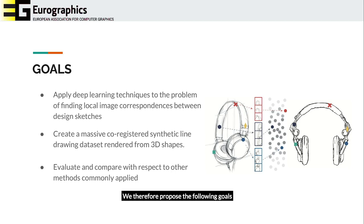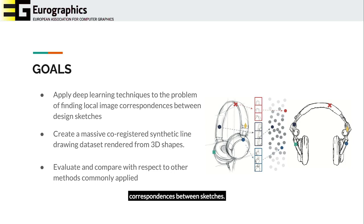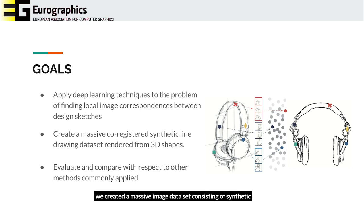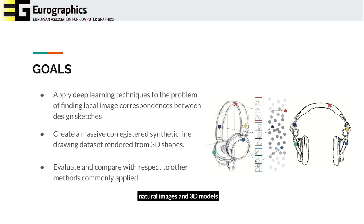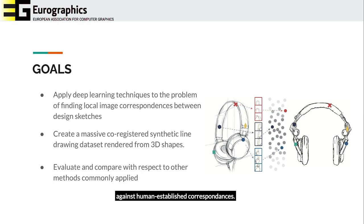We therefore propose the following goals. First, we want to investigate how to use and apply deep learning techniques to solve the problem of finding correspondences between sketches. Second, in order to learn such networks, we need to find a solution for the lack of data. For this reason, we created a massive image dataset consisting of synthetic line drawings rendered from 3D shapes. Finally, we aim to assess the effectiveness of our method. Therefore, we evaluate and compare it against handcrafted descriptors targeting sketches and data-based descriptors designed for corresponding natural images and 3D models. Moreover, we additionally perform a perceptual study against human-established correspondences.